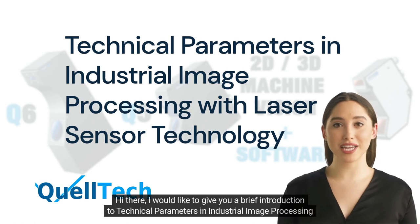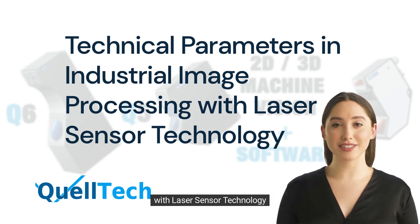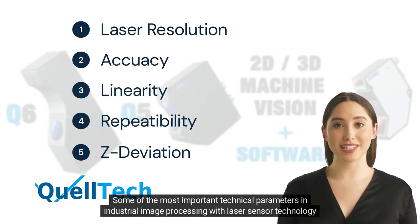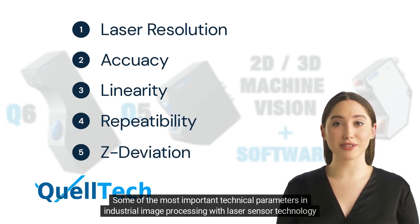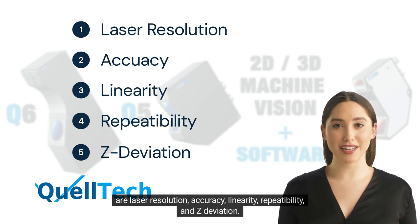Hi there. I would like to give you a brief introduction to technical parameters in industrial image processing with laser sensor technology. Some of the most important technical parameters are laser resolution, accuracy, linearity, repeatability, and z-deviation.